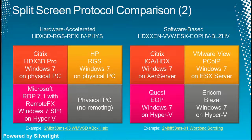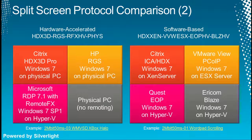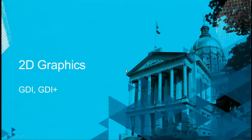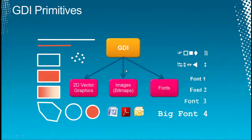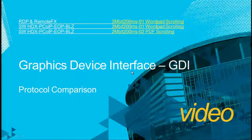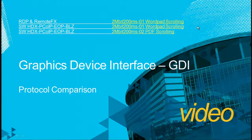We did the same thing for the hardware-accelerated protocols and the software-based protocols. So Citrix HDX3D Pro, HP RGS, RDP 7.1 with RemoteFX on Hyper-V, and a physical PC without remoting to have a baseline — how good does it look when you're using the physical PC? And the software-based group includes Citrix, VMware View, Quest EOP, and Ericom Blaze. These are the settings.